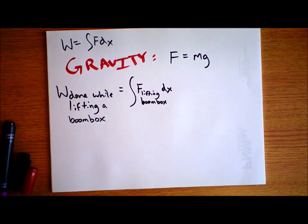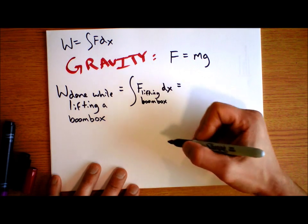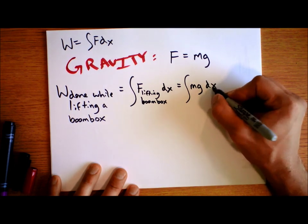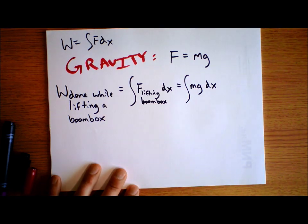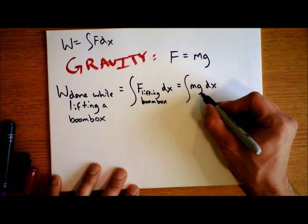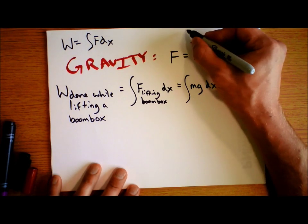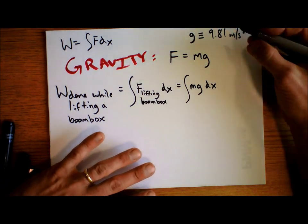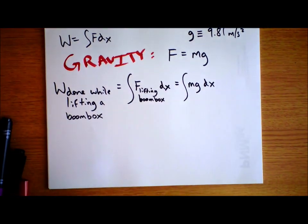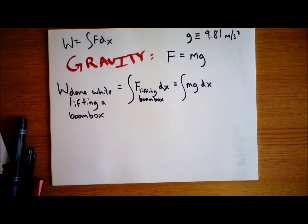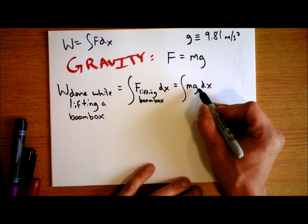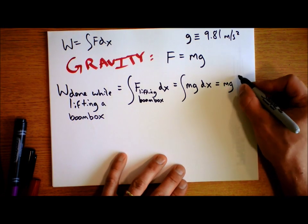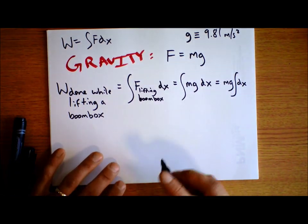We plug in the force: it is the integral of m times g over distance. Does mass change as the boombox rises? No. Does g — that constant of nature, 9.81 meters per second squared — change? No. So m and g don't change with distance, so we can pull them out of the integral: m times g times the integral of dx.